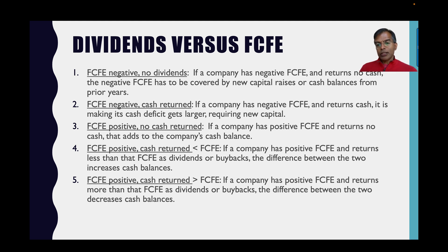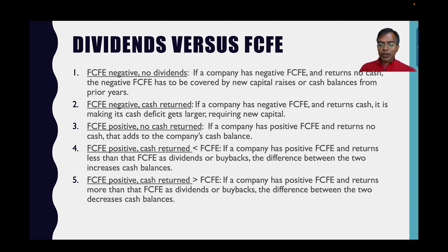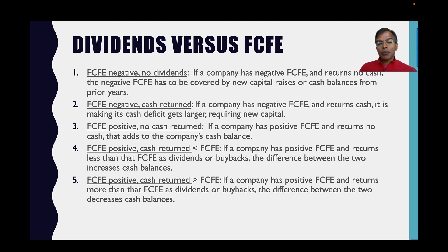When you look at dividends versus free cash flow to equity, there are five possible scenarios a company can fall into. The first is a company with negative free cash flow to equity and no dividends — often young growth companies, and if they're doing the right thing they should be returning no cash. The second is a company with negative free cash flow to equity that is nonetheless returning cash, either in dividends or in buybacks.